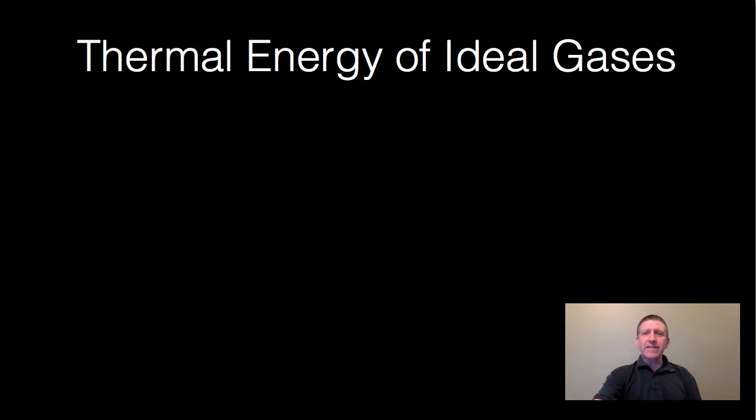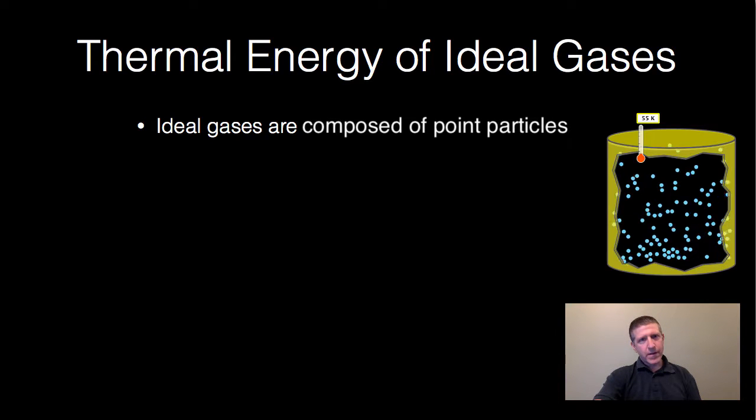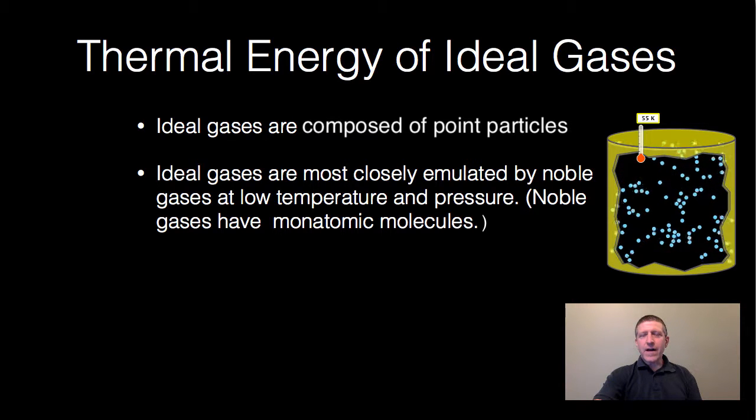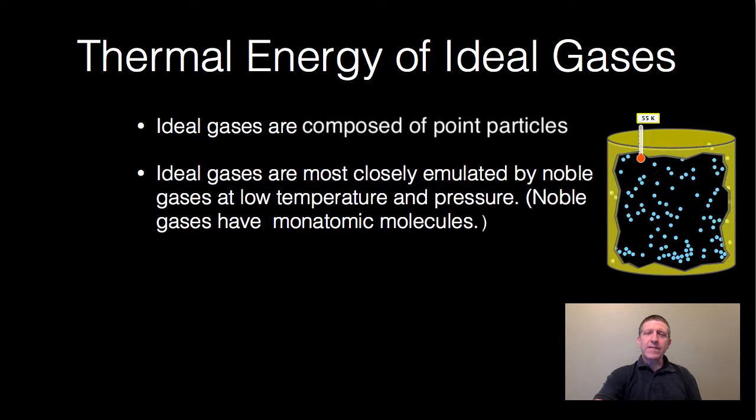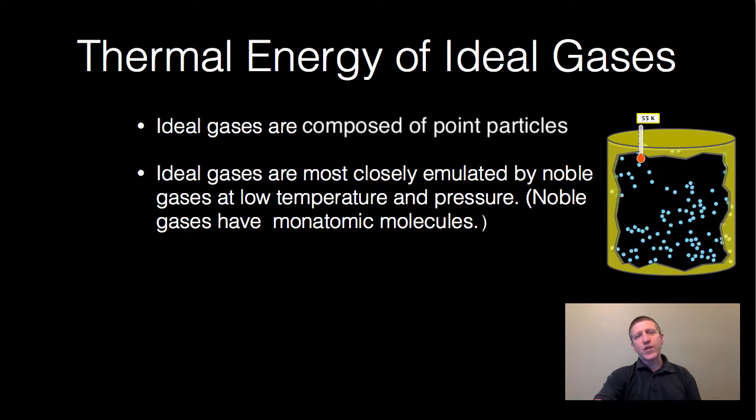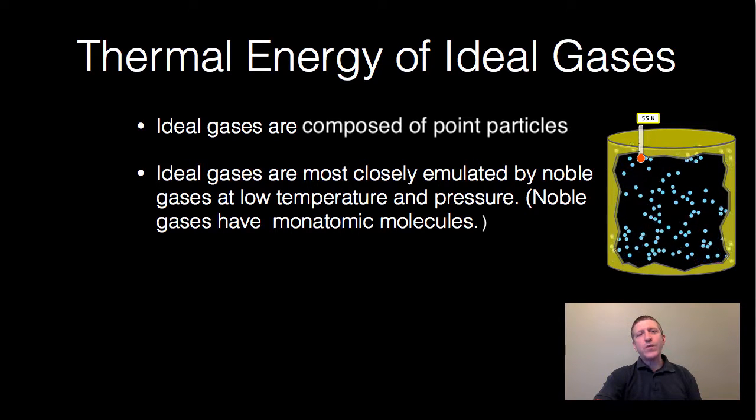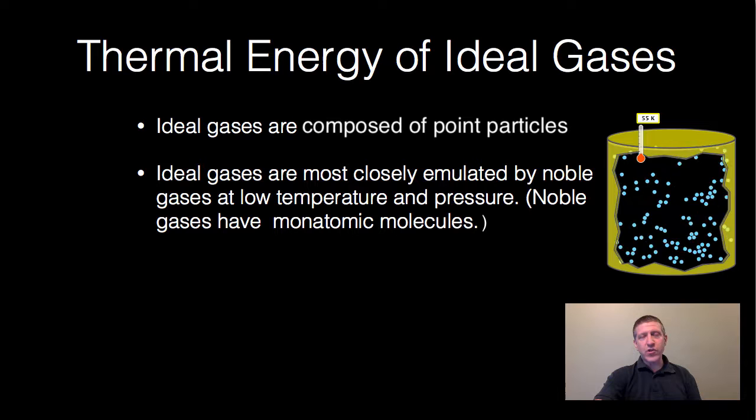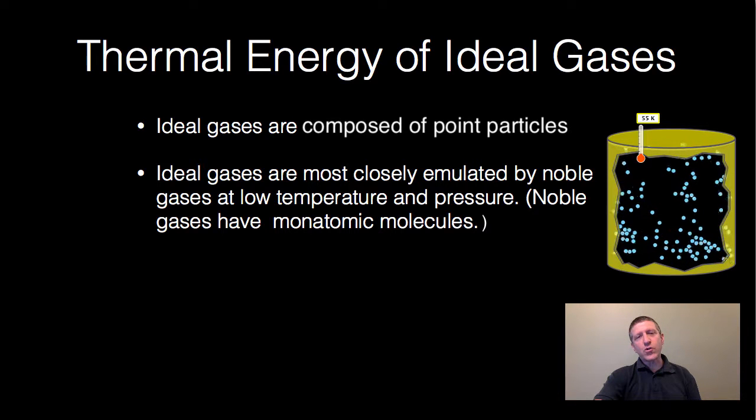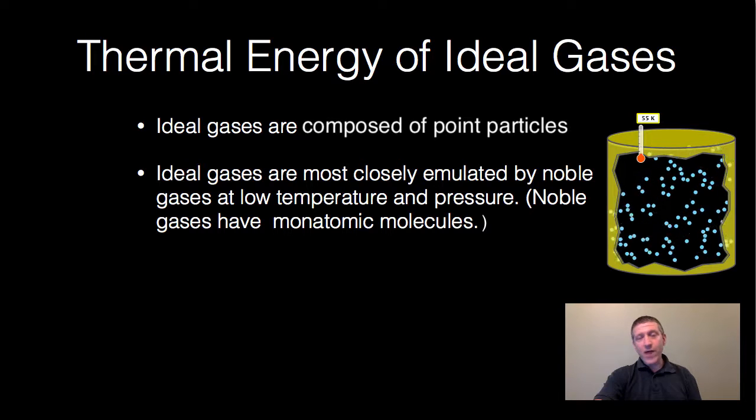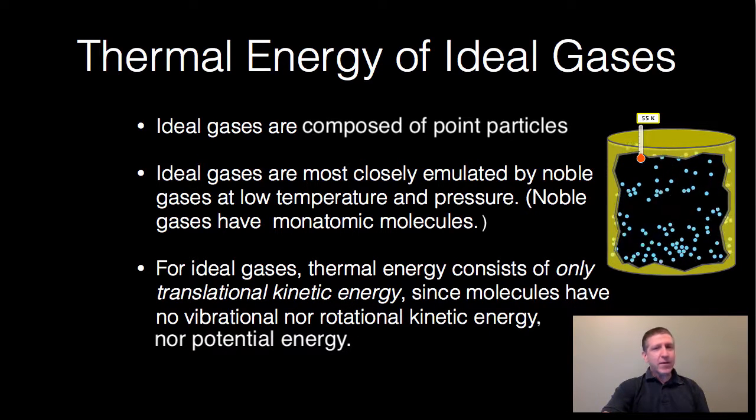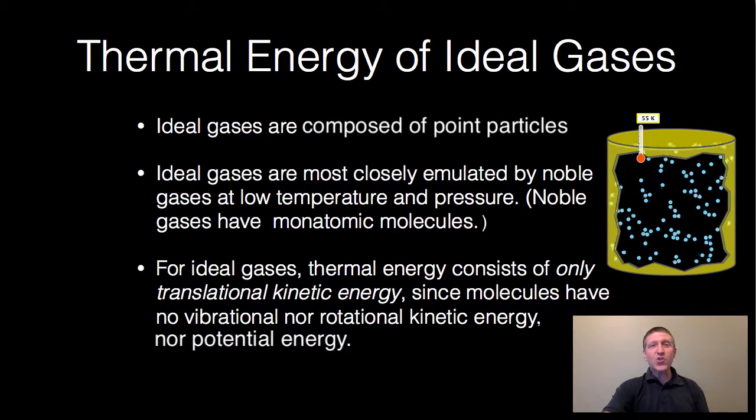In ideal gases, this becomes a whole lot simpler. Ideal gases are considered to be composed of point particles. So ideal gases, the closest we can get to them is a noble gas at low temperature and pressure. Noble gases like argon, neon, those have only one atom per molecule. So since they have only one atom, they don't have any vibrational kinetic energy. They don't have any rotational kinetic energy. All they have is translational kinetic energy. And these ideal gases are also assumed to have no electromagnetic potential energy. They don't attract each other. They just bounce off each other when they collide. For ideal gases, therefore, thermal energy consists of only translational kinetic energy.